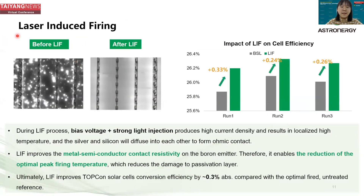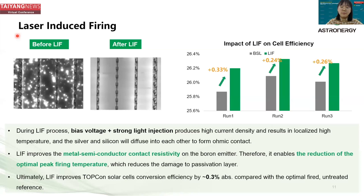We also adopt another technology called laser induced firing. During this process, a biased voltage and strong light injection produce a high current density, resulting in localized high temperature. This allows silver and silicon to diffuse into each other to form ohmic contact. Because contact resistivity is already improved, we can reduce the optimum peak firing temperature, reducing damage to the passivation layer of TOPCon cells. This process can improve TOPCon cell efficiency by 0.3%.